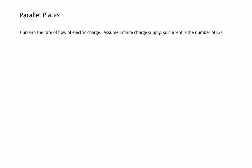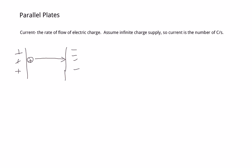Today we're doing a few add-on notes from what we did previously with voltage. The first thing we're going to talk about is what current is. Current is the flow of electric charge. If we have parallel plates, one plate positive and one plate negative, and we put a positive charge in here, it's going to move across the plates due to repulsion and attraction. We know that's going to have voltage — there's going to be energy as that thing moves. But anytime we have a moving charge, there's also current.